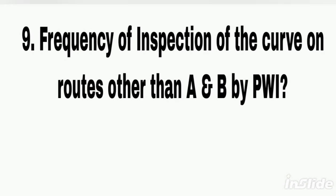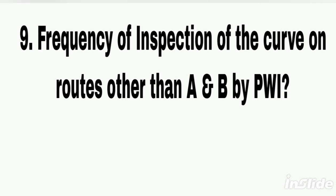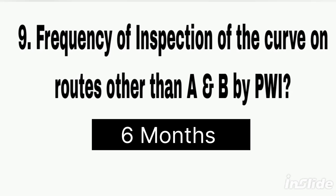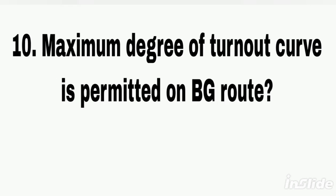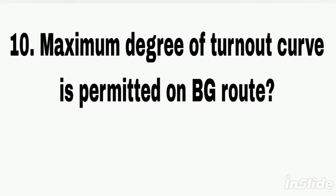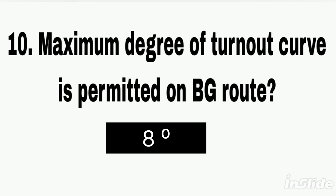Q9. Frequency of inspection of the curve on routes other than A and B by PVI. Answer: 6 months. Q10. Maximum degree of turn-out curve permitted on broad gauge route. Answer: 8 degree.